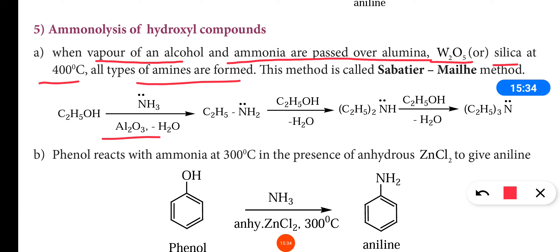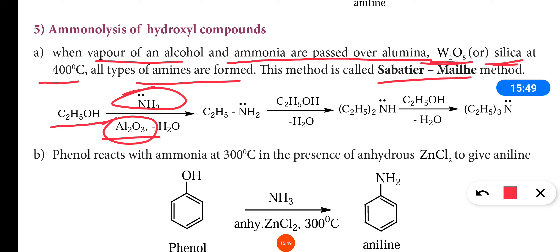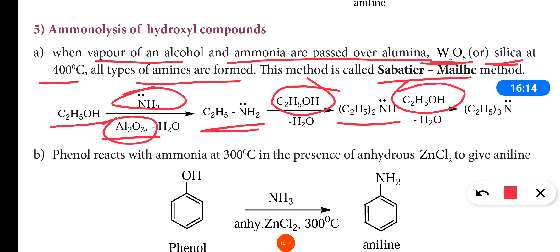This method is called the Sabatier-Melge method. When primary amine is further reacted with one mole of alcohol, secondary amine is formed, and that further reacted with one mole of alcohol gives tertiary amine.